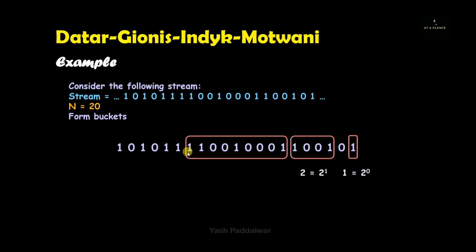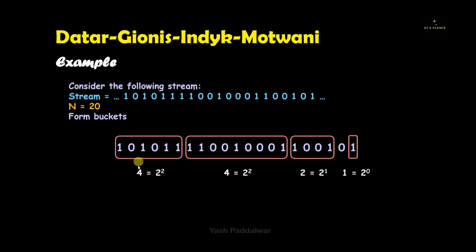Moving further left, we can take four 1s into a single bucket of size 4, which is valid because the rightmost element is 1 and 4 is a power of two. The remaining bits on the left also form a bucket of size 4. All rules are satisfied, and the rule that no more than two buckets should be the same length is also not violated.